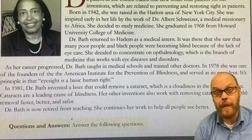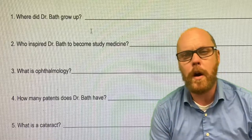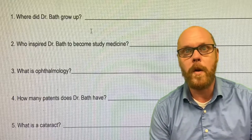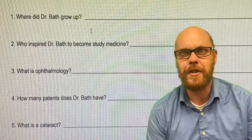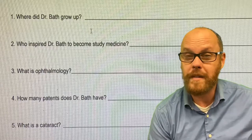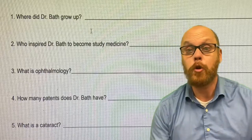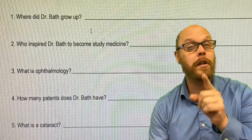The next thing you're going to need is to take a look at these next five questions. Number one: where did Dr. Bath grow up? Two: who inspired Dr. Bath to study medicine? Number three: what is ophthalmology? Number four: how many patents does Dr. Bath have? And number five: what is a cataract? I am urging you, go back into the story. All of the answers are in the story. You just got to know where to find it. Good luck, and I cannot wait to see your answers.